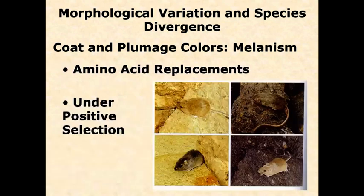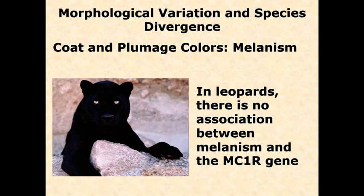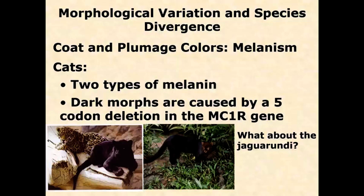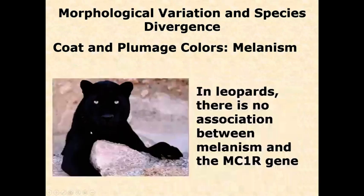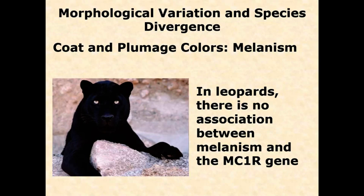So in jaguars it's the MC1R gene, but here is a leopard. The way you can tell jaguars from leopards is jaguars typically have rings with spots in between, where leopards just have clusters of spots. There are melanic forms of both leopards and jaguars. But in leopards, there is no connection with the MC1R gene — it's a completely different gene. That's a great example: things we may know are convergence, we can gather additional genetic data to support it. The exact mutation in the jaguar versus a different mutation in the leopard confirms they are convergent mutations.